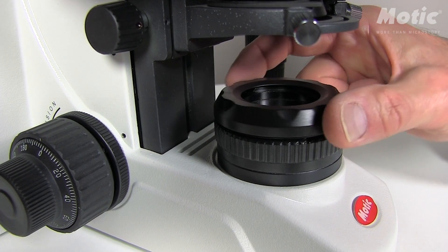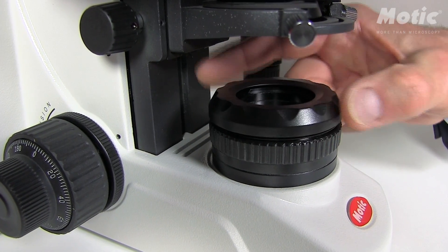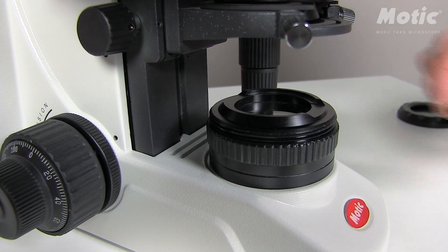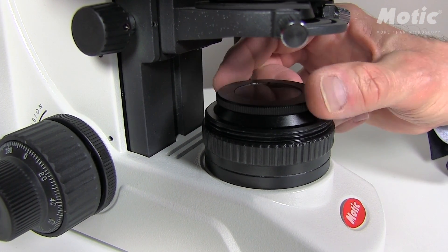So how to set up the polarization contrast on our BA210 and 310 models? In this case we do have the BA310 ELITA in order to show it to you. For the polarizer, just unscrew the fixing cap on top of the light exit and place the polarizer on top.